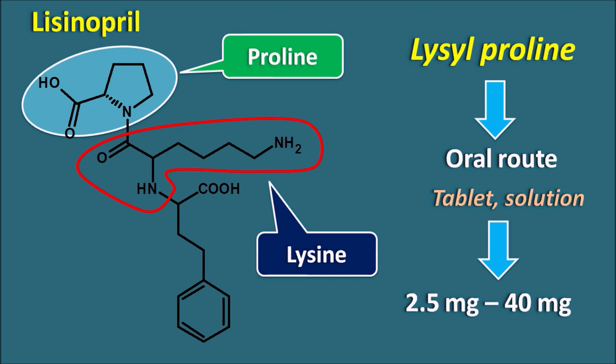We also have related drugs like enalapril, which is an ester of alanyl-proline and is a prodrug — when metabolized, it produces an active metabolite with a free carboxylic acid. Similarly, captopril is a modified alanyl-proline derivative. Many ACE inhibitors have peptide linkages, but because of their modified structures and small peptide linkages, they are suitable for the oral route.